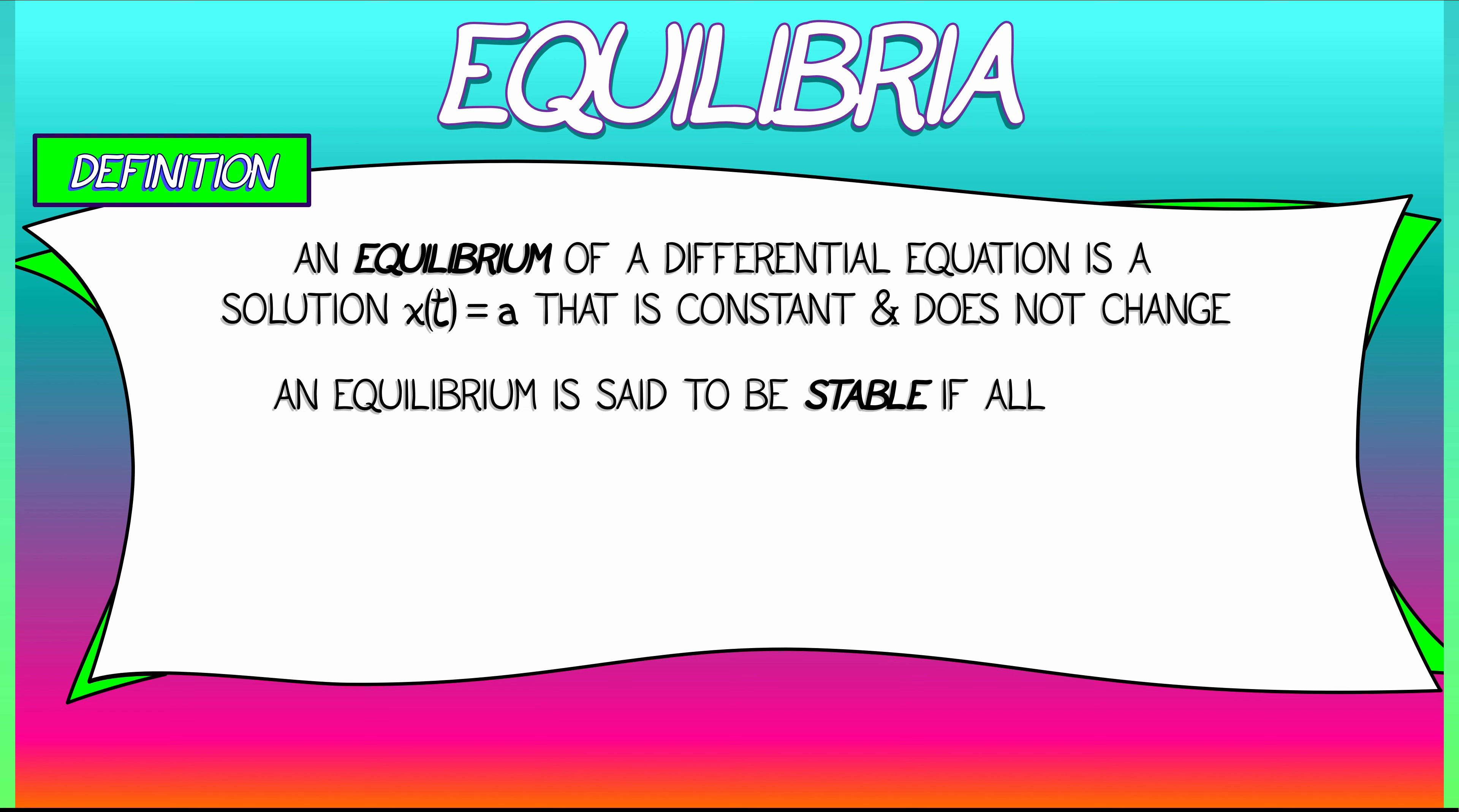stable if all nearby solutions x(t) whose initial condition is close to the equilibrium a converge to a as t goes to infinity. That means the limit of x(t) as t→∞ equals a. That's a stable equilibrium, and we can see how that matches our intuition of what things look